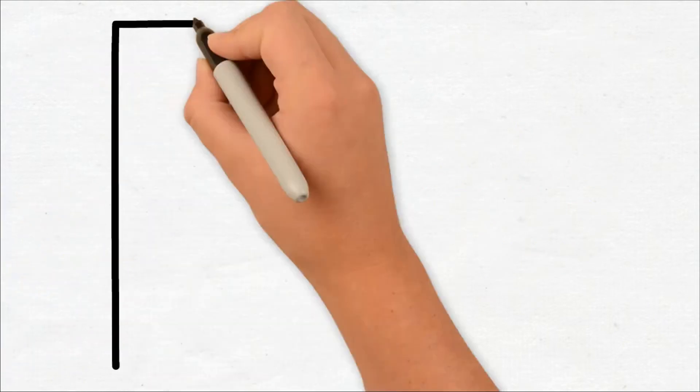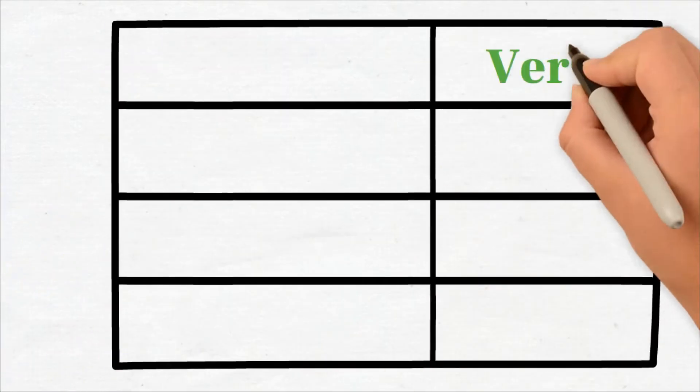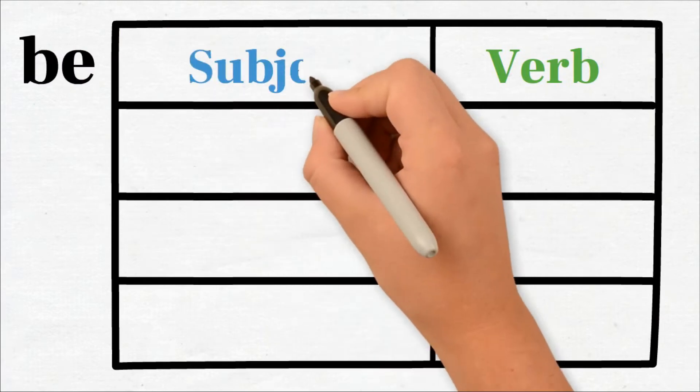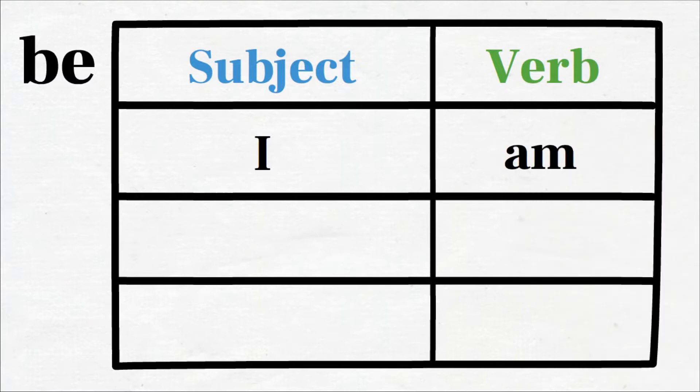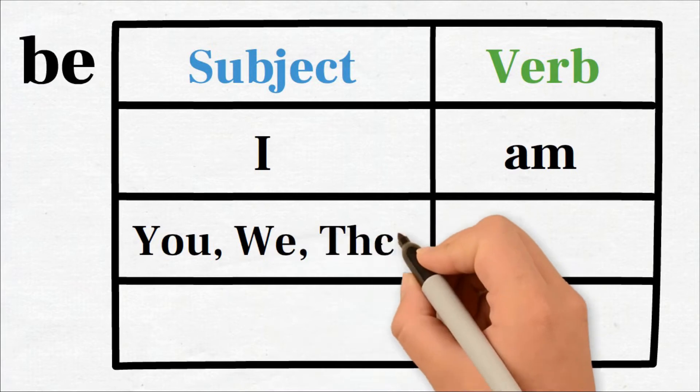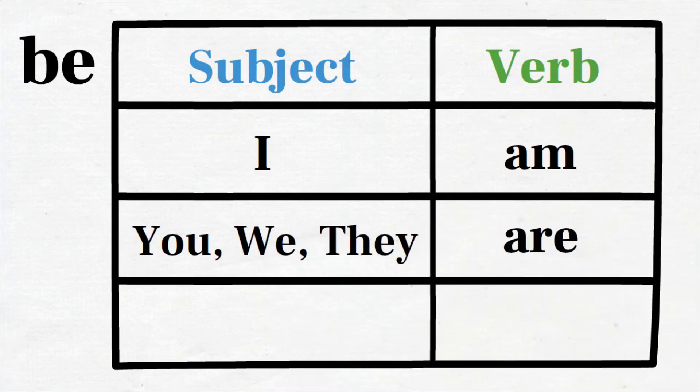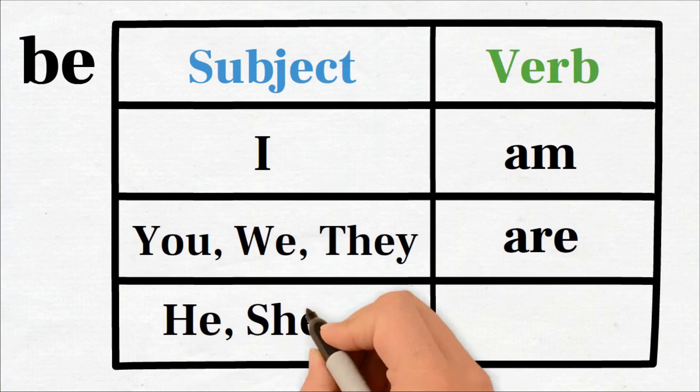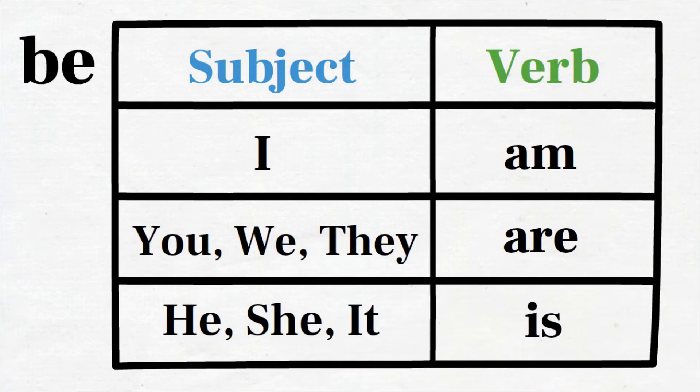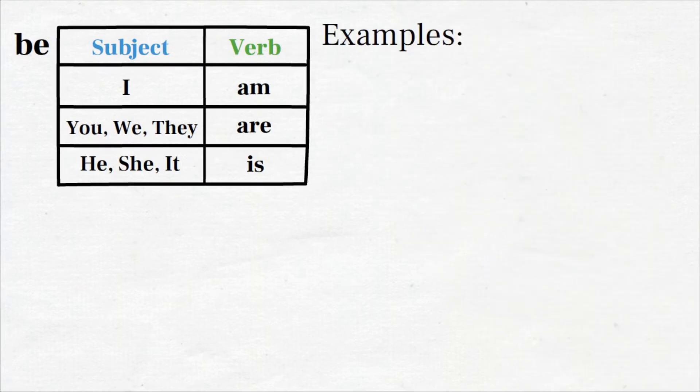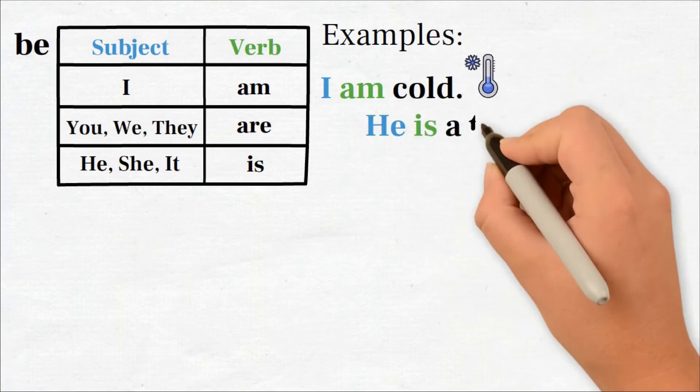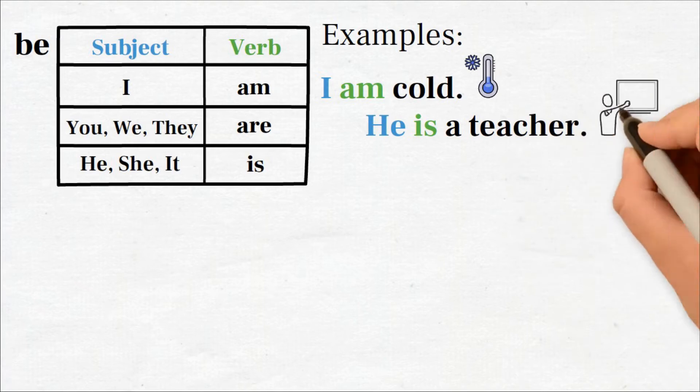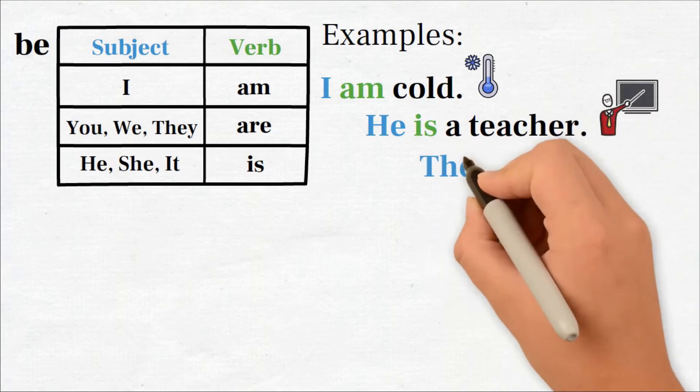Here is the table that shows the correct forms for the verb be. Subject I am. You, we, they are. He, she, it is. Here are some example sentences: I am cold. He is a teacher. They are tall.